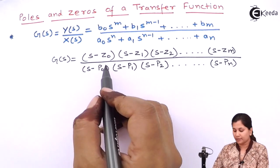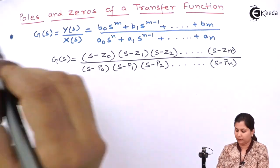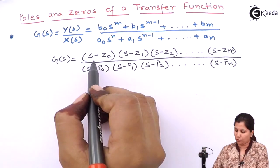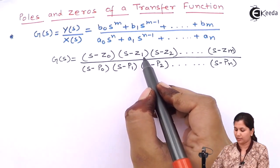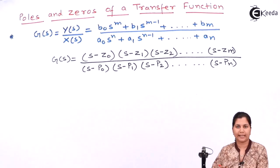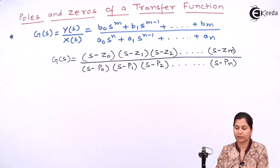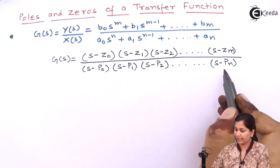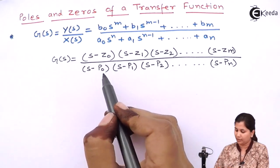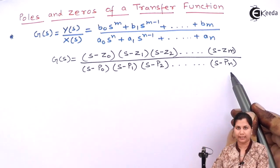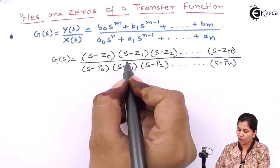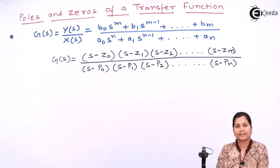The factors of the numerator polynomial — there are M factors. Each factor is represented by Z0, Z1, Z2 till Zm. So there are M roots of the numerator polynomial and N roots of the denominator polynomial: P0, P1, P2 till Pn. The roots of the numerator polynomial are known as the zeros of the transfer function.